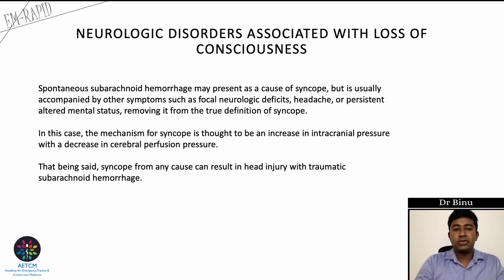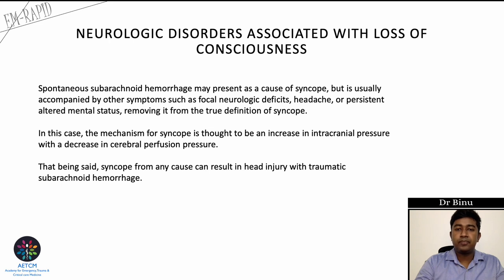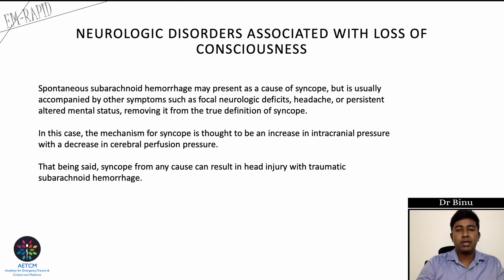Spontaneous subarachnoid hemorrhage may appear as syncope but is usually accompanied by sudden onset of very severe headache, focal neurological deficits, or persistent altered mental status, removing it from the true definition of syncope. The mechanism is thought to be an increase in intracranial pressure with a decrease in cerebral perfusion pressure, using the formula: cerebral perfusion pressure = mean arterial pressure minus intracranial pressure. Additionally, syncope from any cause can result in head injury with traumatic subarachnoid hemorrhage.